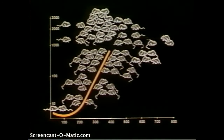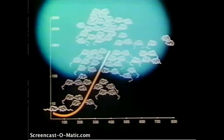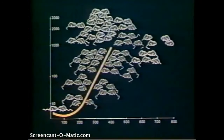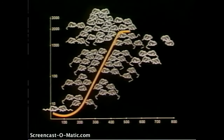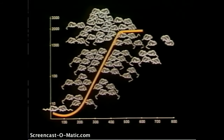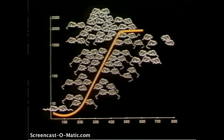The third period, consisting of 300 days, found the population of mice leveling off. This was called the equilibrium period. Dr. Calhoun noticed that the newer generations of young were inhibited, since most space was already socially defined.